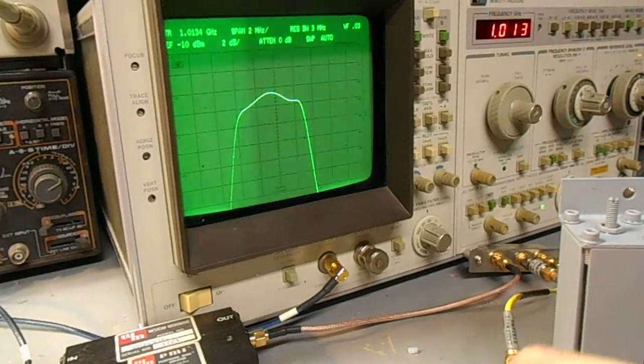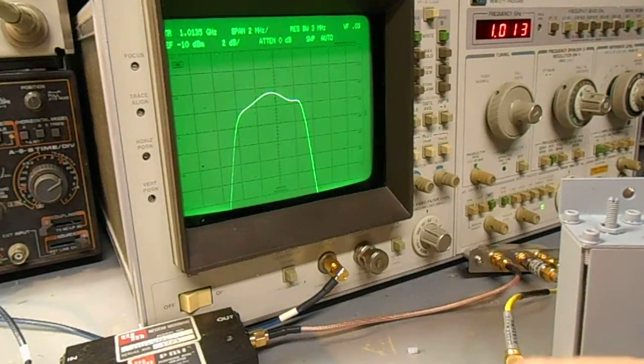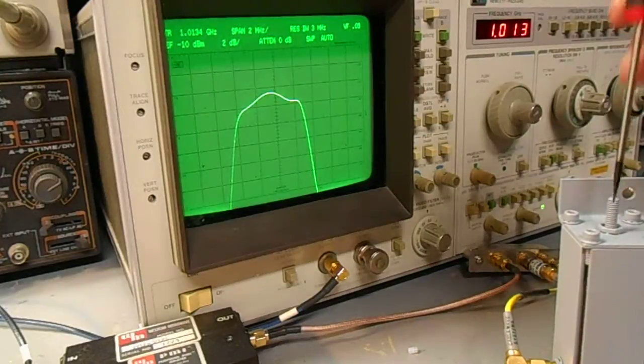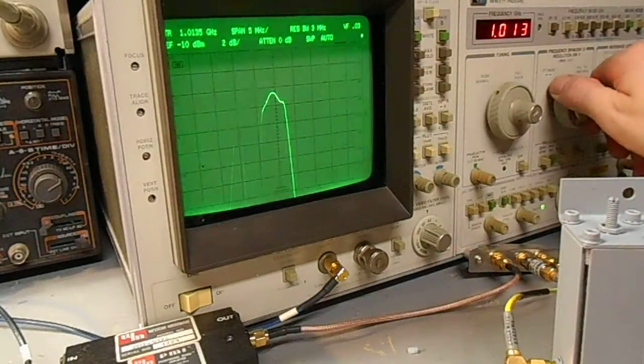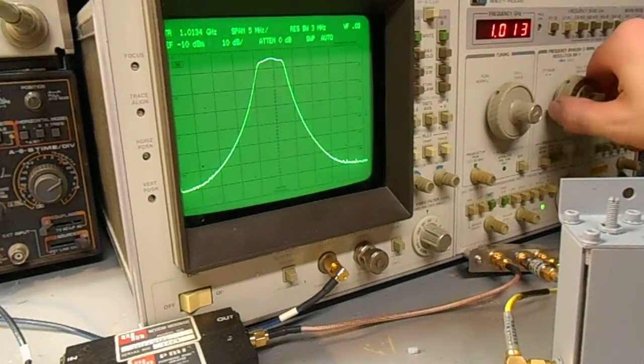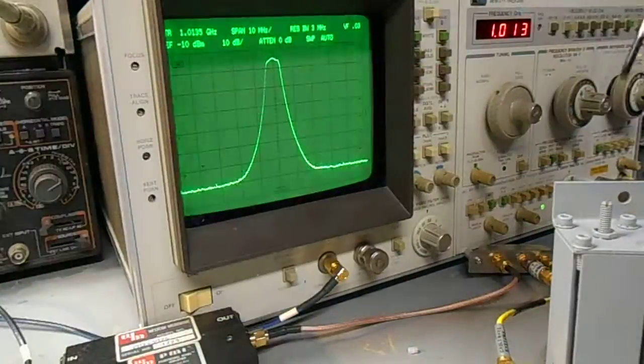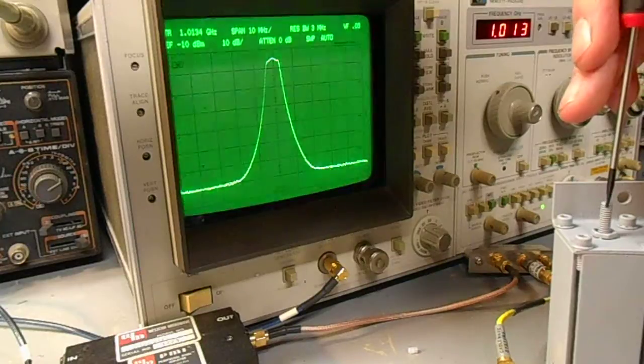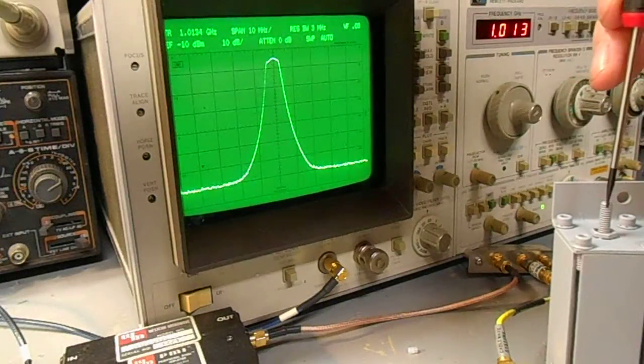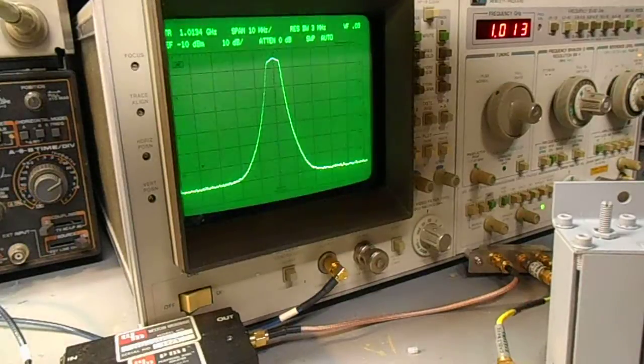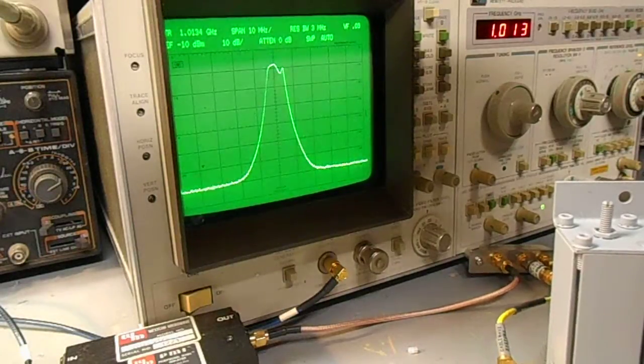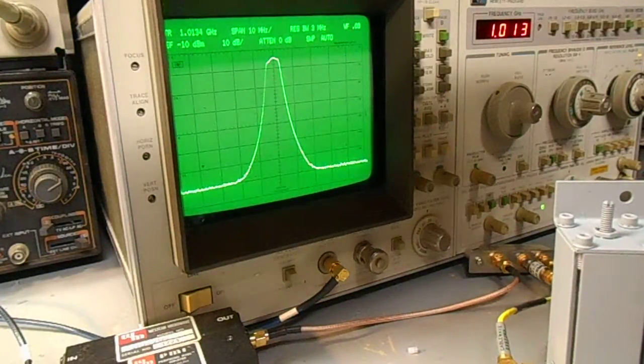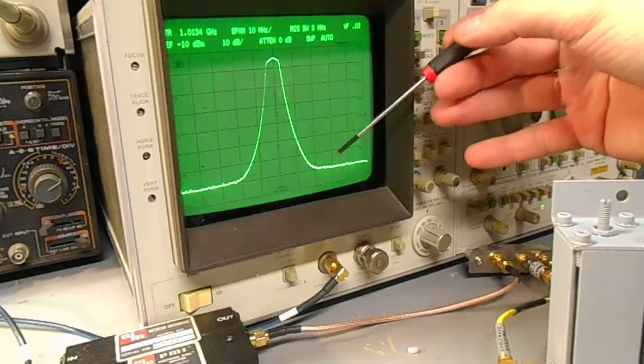The frequency response of the cavity is a little bit wider than normal. Normally you can get them much narrower, but it does appear to work out pretty good. It really helps to have the proper test equipment to align these. I'm just tuning in one of the stubs just to show you the frequency response, how you can alter the response. You don't want any ripple in the pass band, and you want the maximum rejection possible in your image frequency.